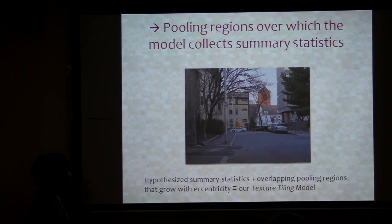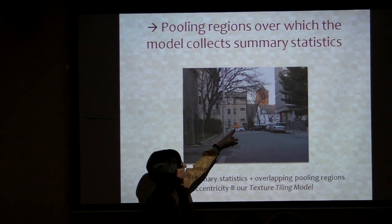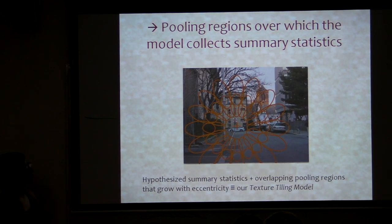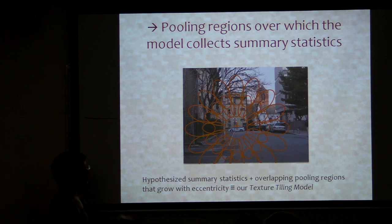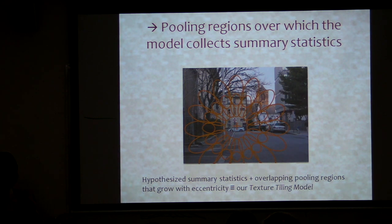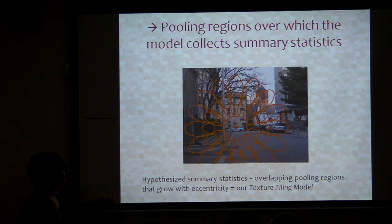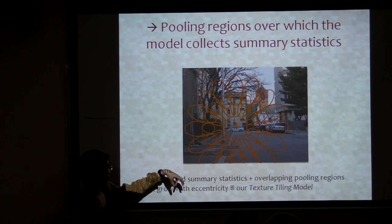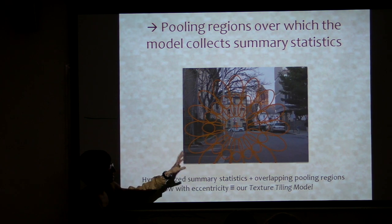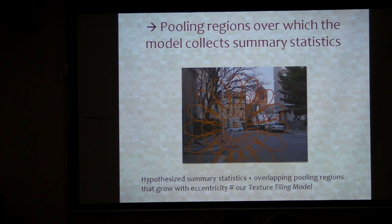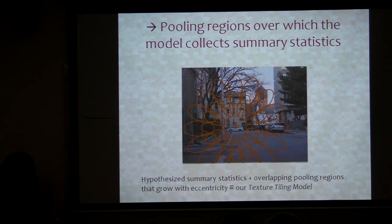Somewhat schematically, we're assuming that if you're looking there at the plus sign, you're going to lay down a bunch of presumably overlapping pooling regions that tile the visual field, and they grow linearly with eccentricity, as suggested by Bouma's Law. This combination of the summary statistics we're hypothesizing, plus the overlapping pooling regions, we're now calling the texture tiling model.